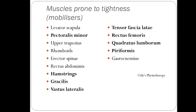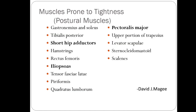The muscles which are prone to tightness are: levator scapulae, pectoralis minor, upper trapezius, rhomboids, erector spinae, rectus abdominis, hamstring, gracilis, vastus lateralis, TFL, rectus femoris, quadratus lumborum, piriformis, gastrocnemius, tibialis posterior, short hip abductors, iliopsoas, pectoralis major, SCM, and scalenes.